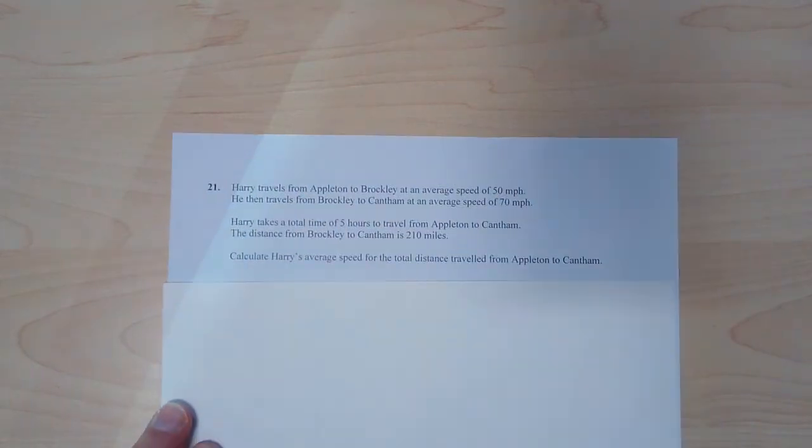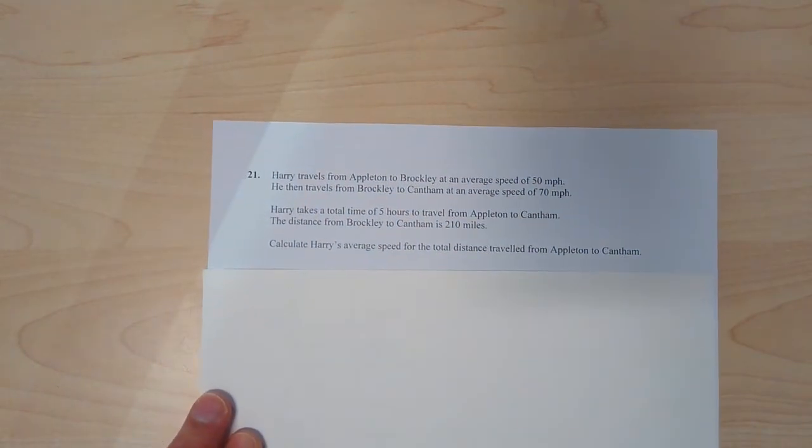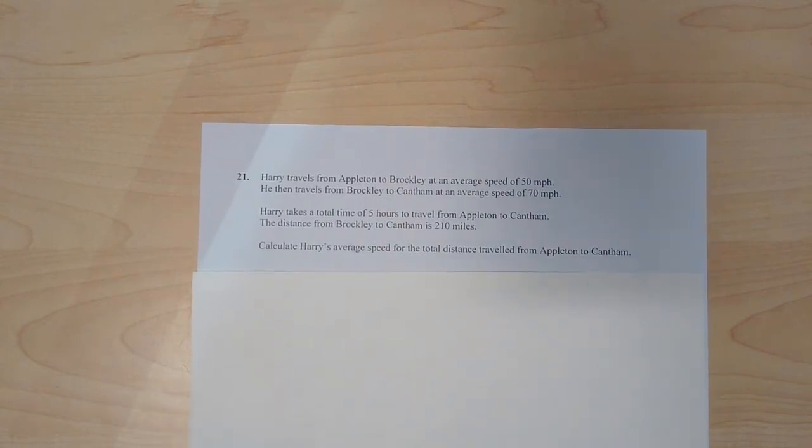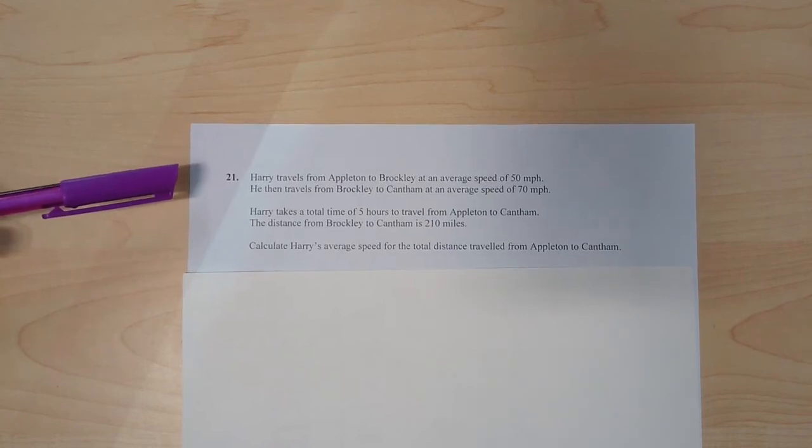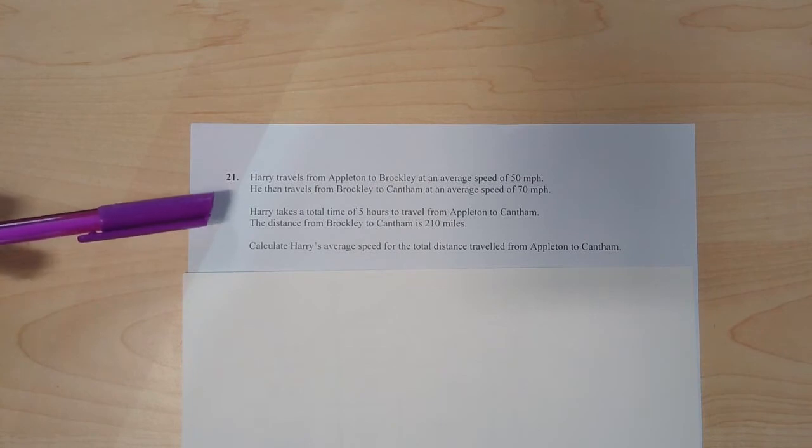Question 21. The last question in the paper says, Harry travels from Appleton to Broccoli at an average speed of 50 miles per hour. He then travels from Broccoli to Cantham at an average speed of 70 miles per hour. Harry takes a total time of five hours to travel from Appleton to Cantham. The distance from Broccoli to Cantham is 210 miles. Calculate Harry's average speed from the total distance travelled from Appleton to Cantham. There's an awful lot of information there.